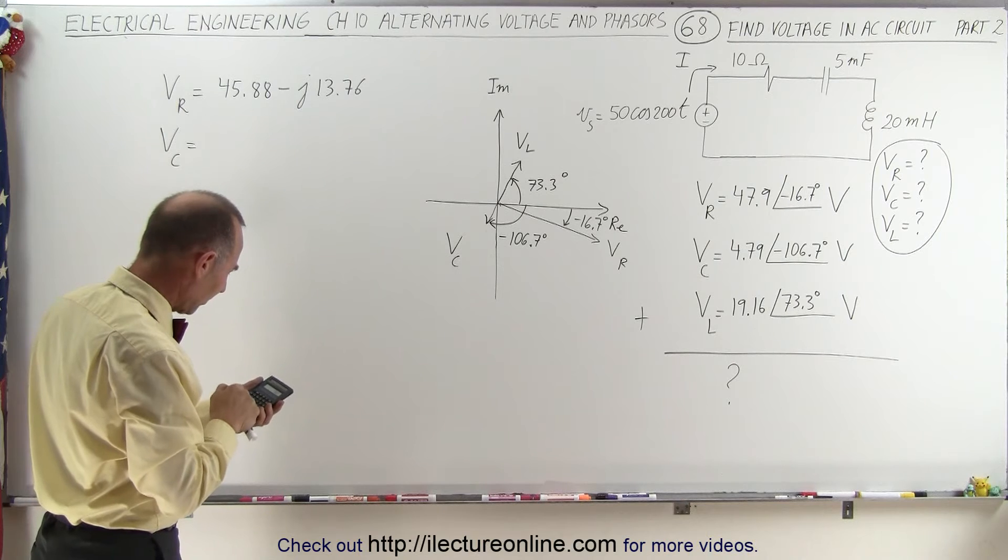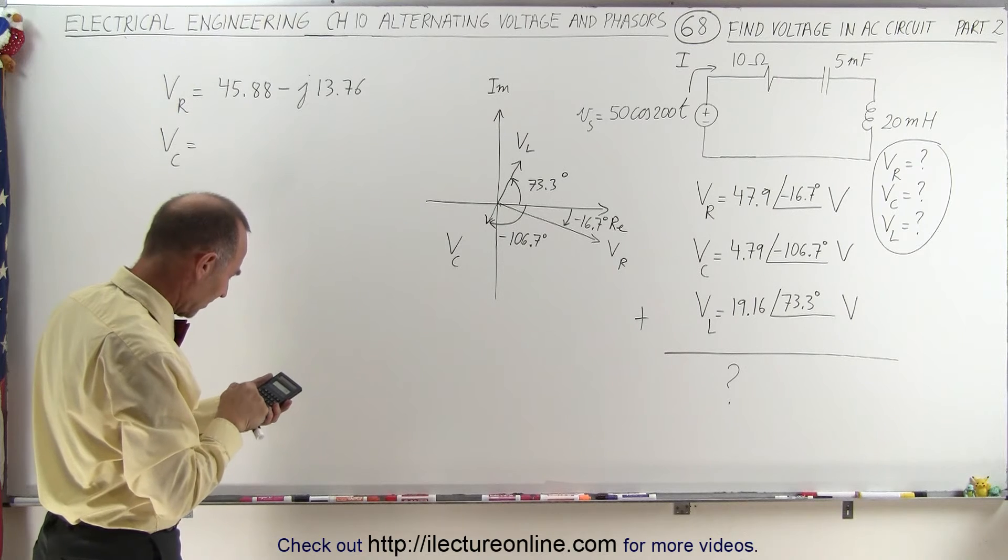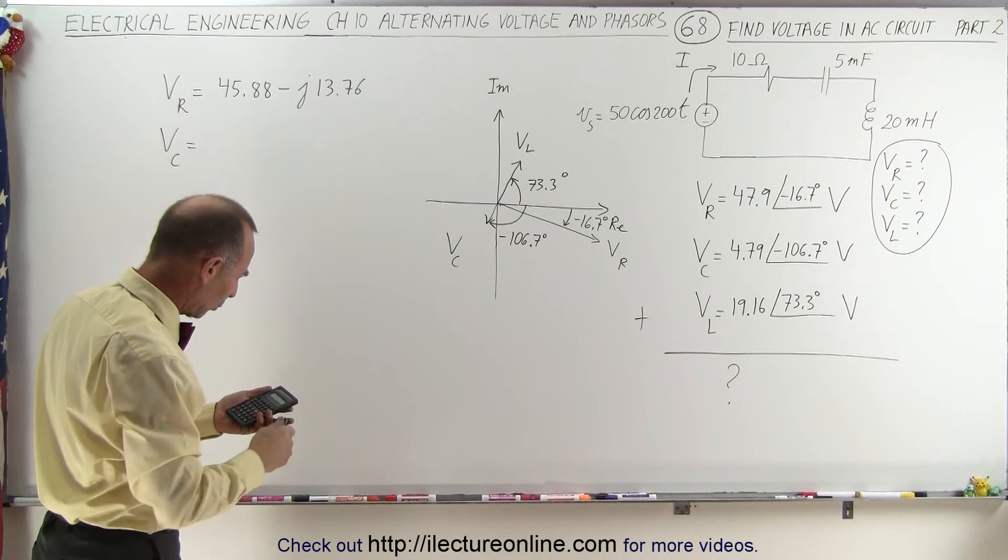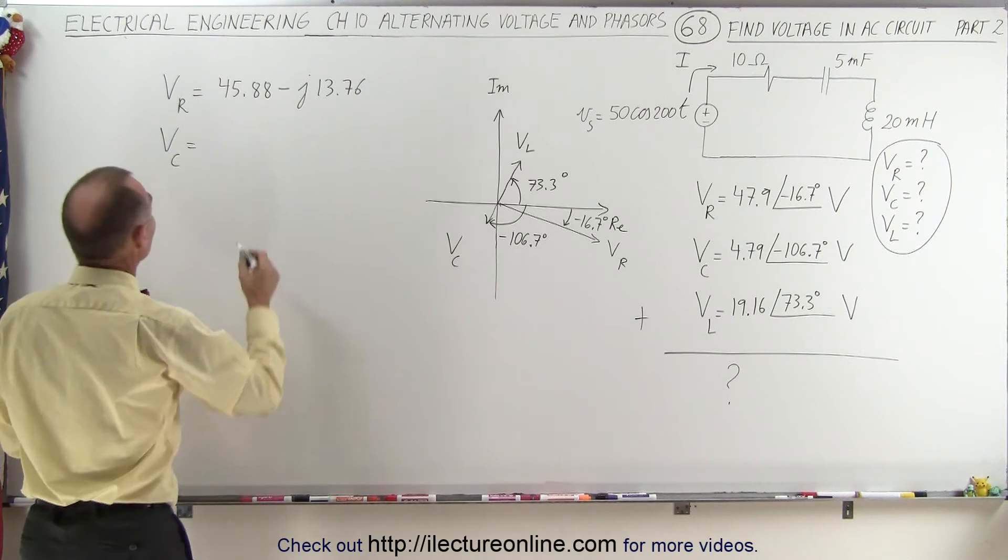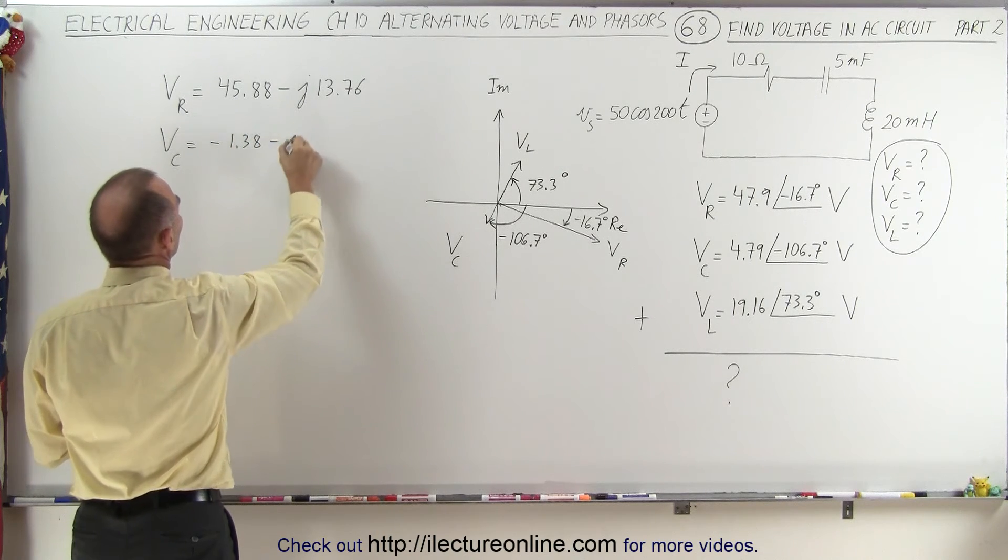So 106.7, take the cosine of that and multiply that times 4.79. That gives us minus 1.38.